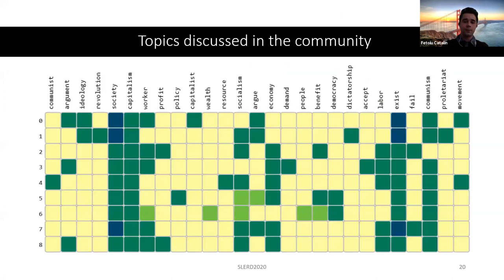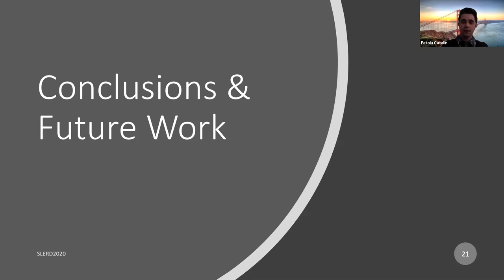The last visualization shows the topics being discussed in the community. We can see, across the nine analyzed weeks, the intensity with which each relevant topic was discussed in a particular period. We can observe topics such as communism, capitalism, economy, and democracy, which are clearly related to the topic of the community.